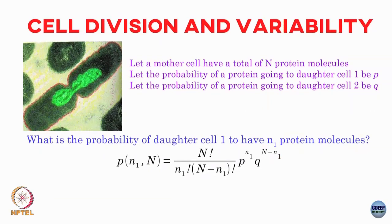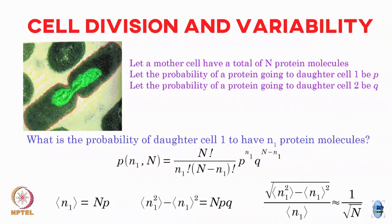With probability P you send n1 molecules to daughter cell 1, with probability Q you send N minus n1 molecules to daughter cell 2. This is N choose n1 - the probability that daughter cell 1 has n1 protein molecules. The mean number of proteins in daughter cell 1 is NP, the variance is NPQ. Fluctuations scale as 1/√N - a standard binomial result. If N is extremely large, fluctuations from cell division are small; if a protein has only 100 or 1000 copies, you can get very large variation simply due to cell division.